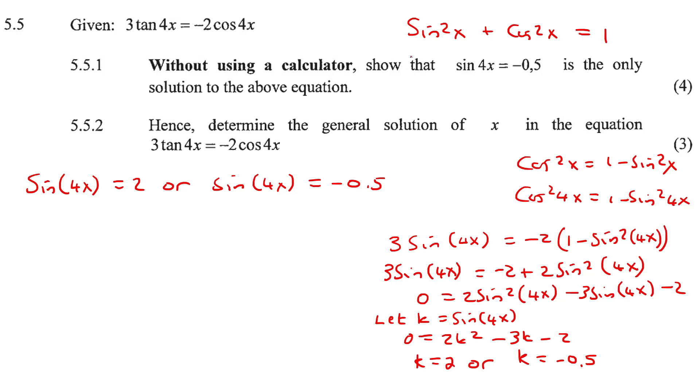Now, they said show that only sin 4x equals negative 0.5 is a valid solution. The reason is that in the next steps, if we had to go solve the general solution, for this one, you would say shift sin of 2, and it would give you an error because sin graph does not go up to 2. It only goes up to 1 and minus 1. So this one would give you an error, and so this one, you can just say no solution. But this one is perfectly valid, and that's what they wanted us to show.